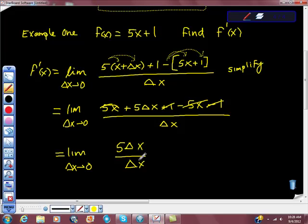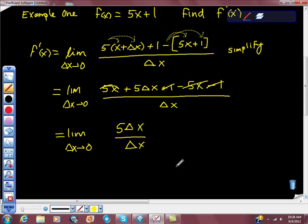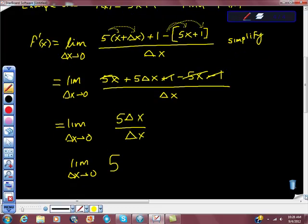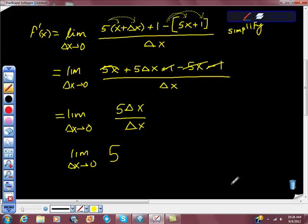Is equal to what? Is equal to 5. So the limit as the change in x approaches 0 of 5. This is a really stupid question, but it's legitimate. What happens here if change of x goes to 0? What happens to this then? It doesn't matter, does it? Because change of x isn't a variable here anymore.